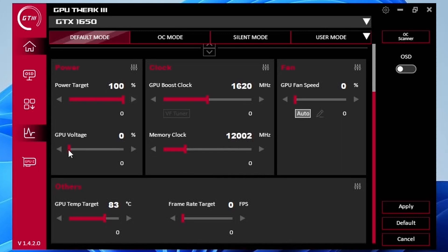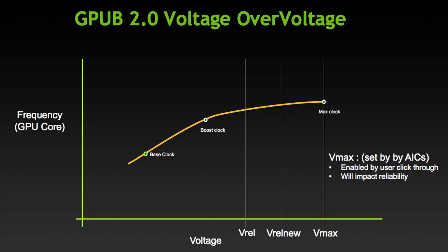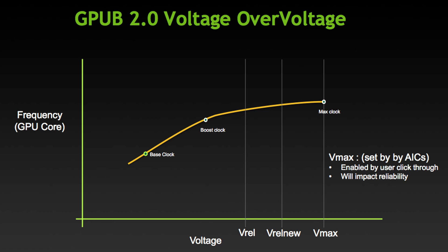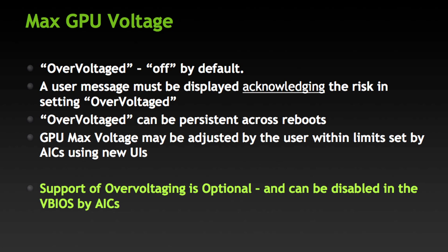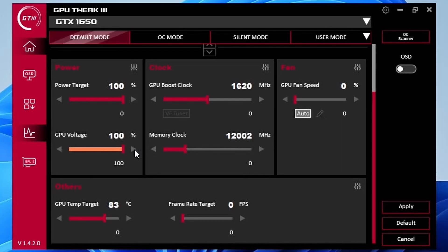Set GPU voltage to 100%. This enables the overvoltage feature present since GPU Boost 2.0. Overvoltage refers to the extended range between the reliability voltage (V-REL) and maximum overvoltage (V-Max) as specified by NVIDIA. V-REL is the highest voltage the GPU will safely run at without harming the long-term lifespan. V-Max is the highest voltage NVIDIA will allow the GPU to run at, as it may hurt the lifespan. This extended voltage range can be enabled or disabled by NVIDIA board partners in the graphics card vBIOS. If enabled, users can access the higher voltage by accepting the associated risks.